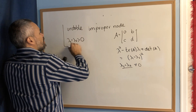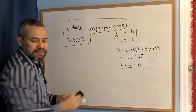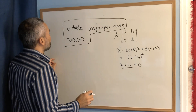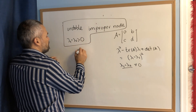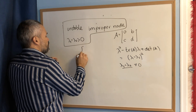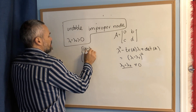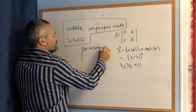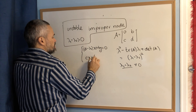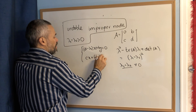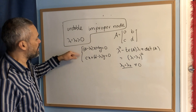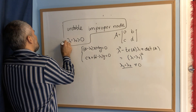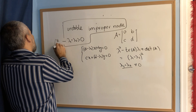In order to do the phase portrait, we find the eigenvector. To find the eigenvector, we solve the system: (a − λ₁)x + by = 0 and cx + (d − λ₁)y = 0. We can find a non-zero solution of this, and let's suppose that non-zero solution is the vector (v₁, v₂).